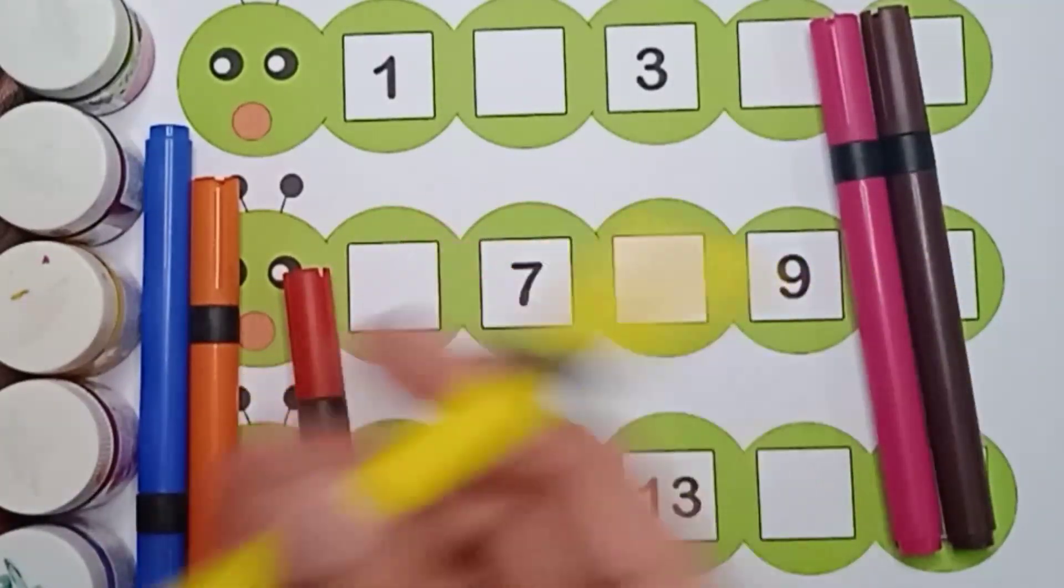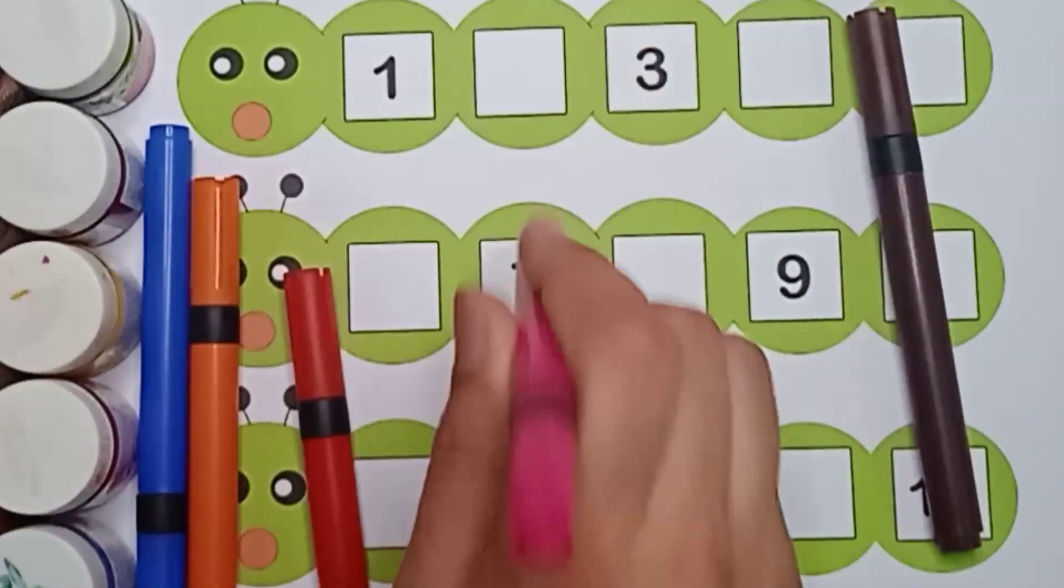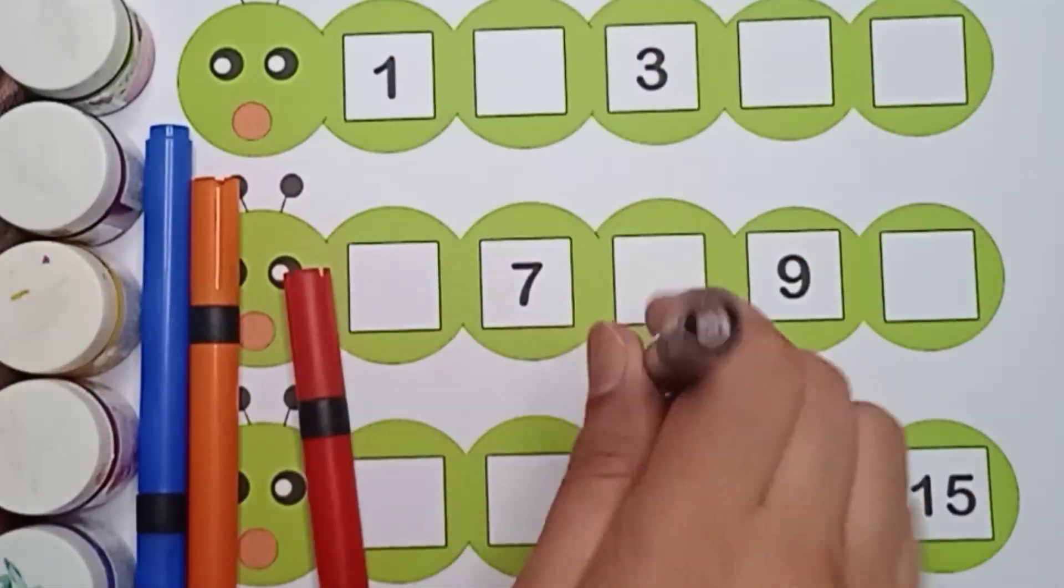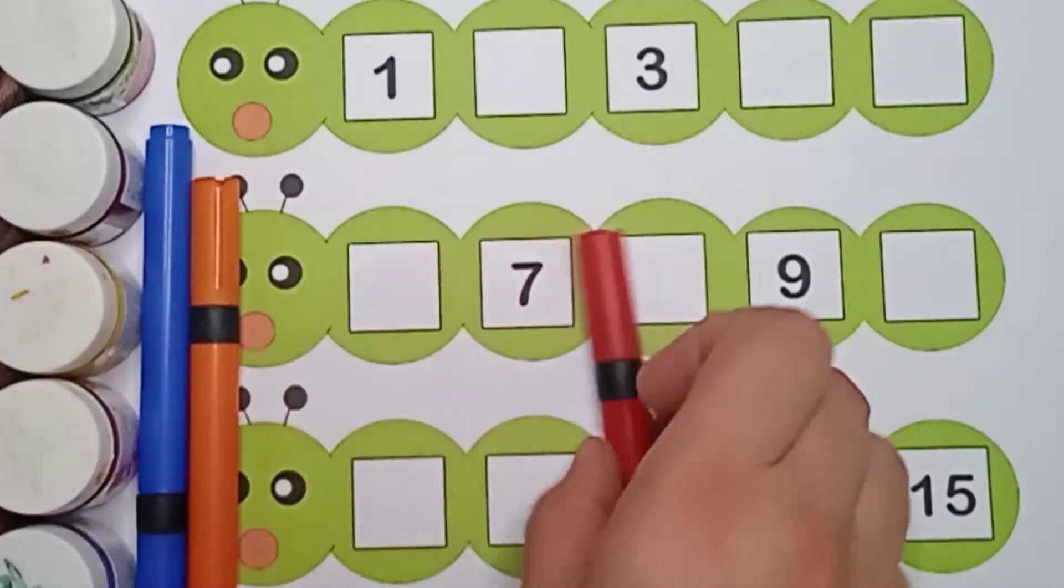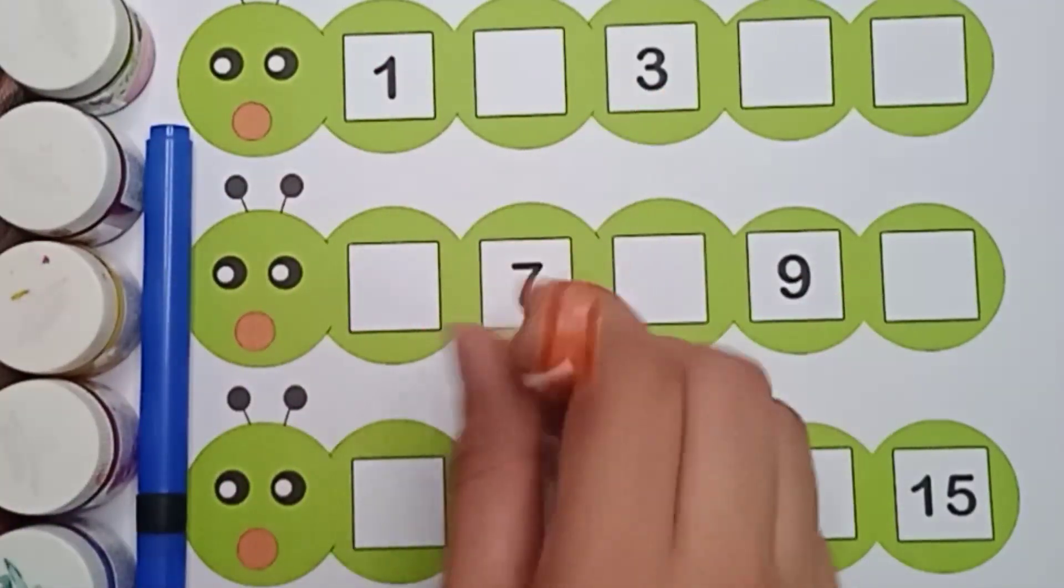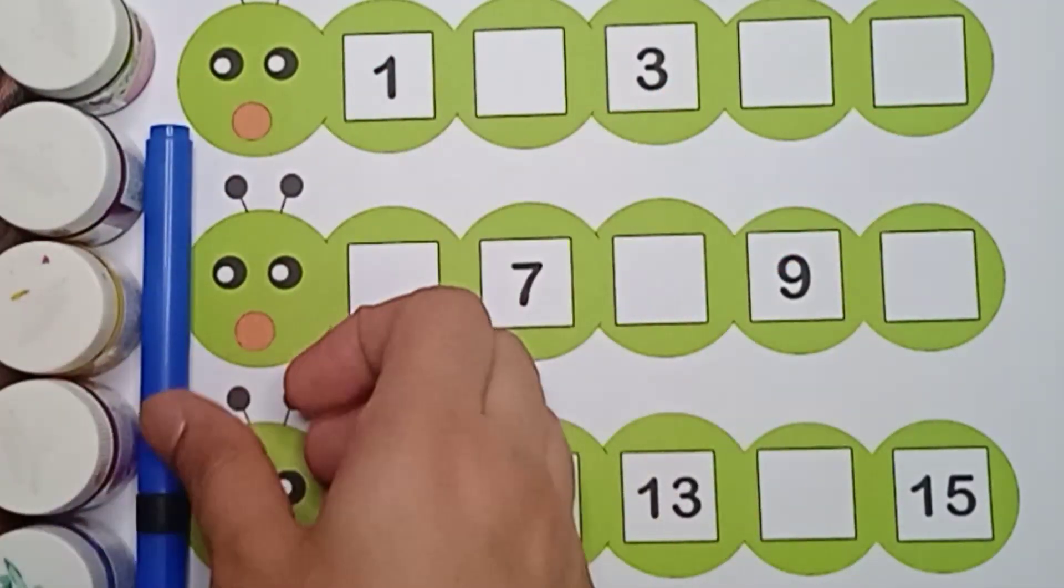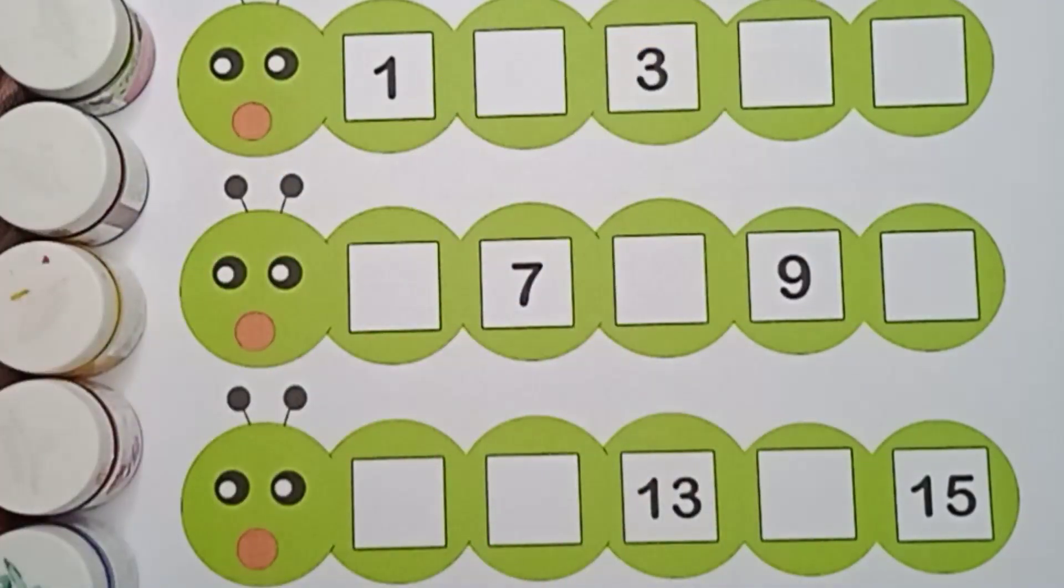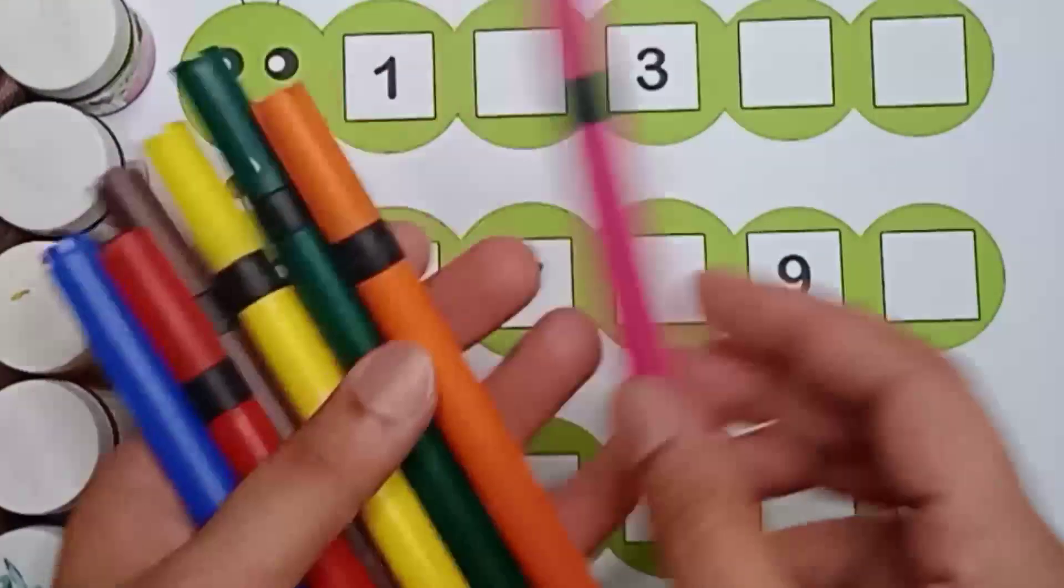Yellow color. Pink color. Brown color. Red color. Orange color. Blue color. How many colors are there?